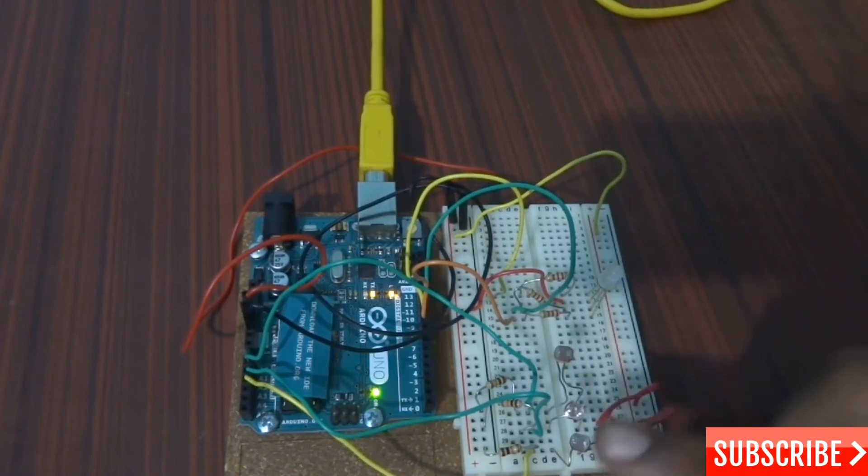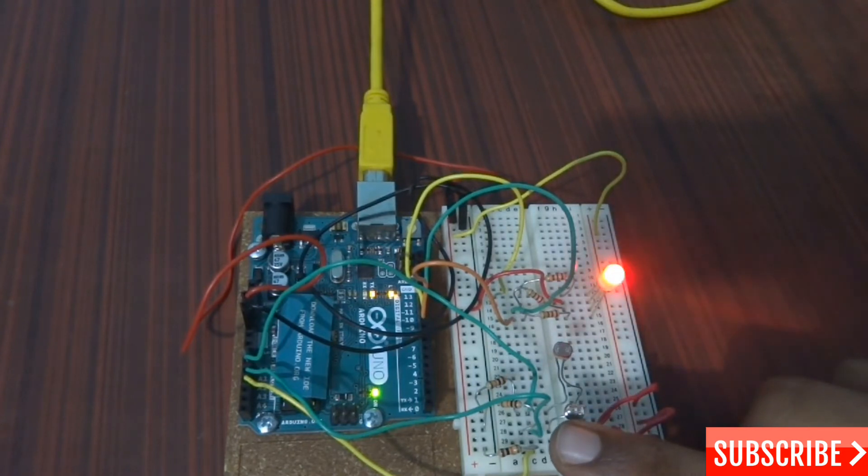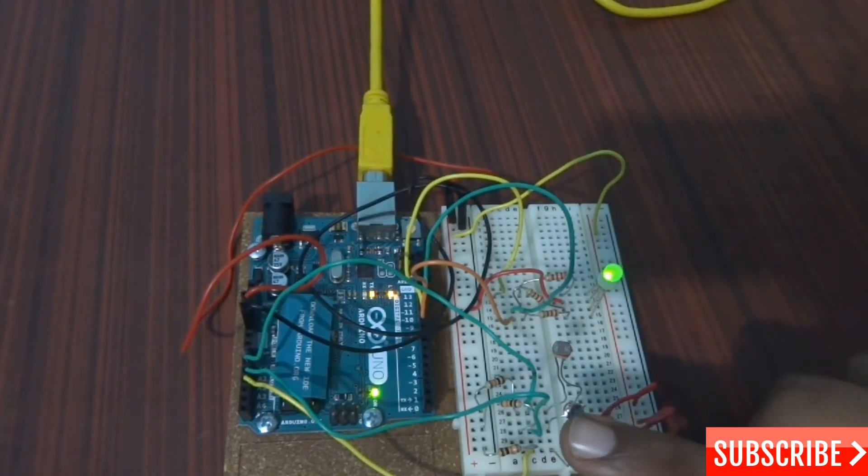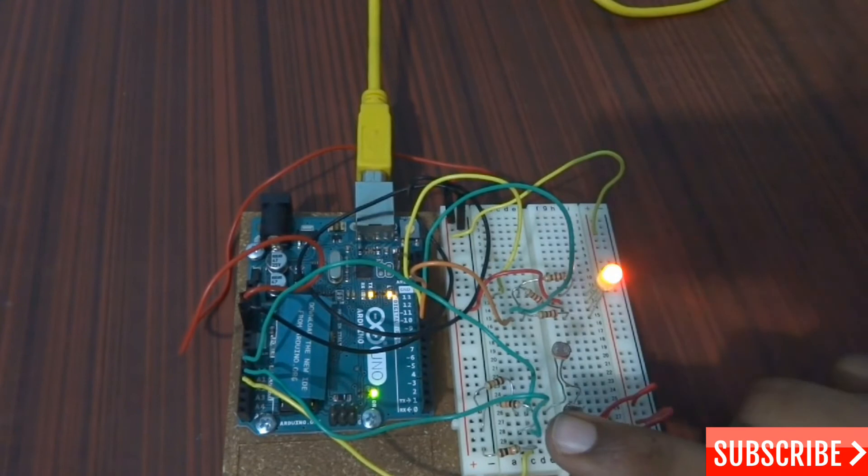As you can see there are 3 photoresistors - 1, 2, 3. You can see it's changing light as I'm blocking it. This is RGB. Now it's red light, now it's green. The intensity increases and reduces as I block the light.